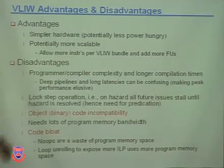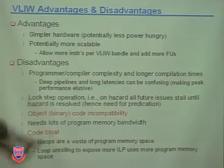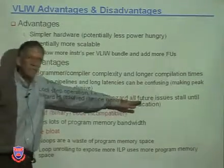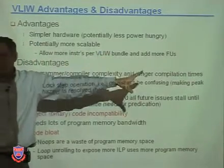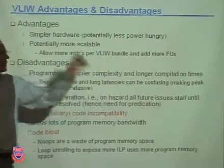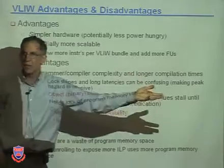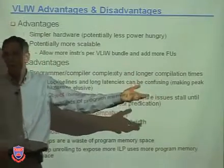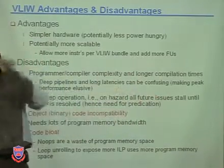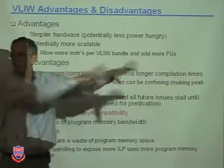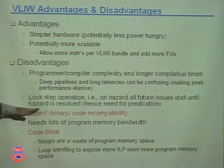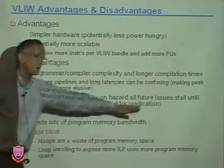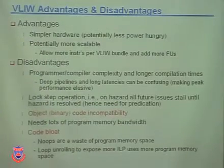It has trouble when pipelines get deep - shallow pipelines are not too bad, but deep pipelines cause long latencies that are confusing for the compiler. Is it safe for this instruction to work with that one, or is there still a hazard? This makes peak performance elusive. If you have a deep pipeline and four words in your VLIW, getting close to a speedup of four becomes hard. Another disadvantage: everything is lockstepped - if one instruction causes a hazard or exception and its partner doesn't, too bad - everybody has to stall until it's resolved.